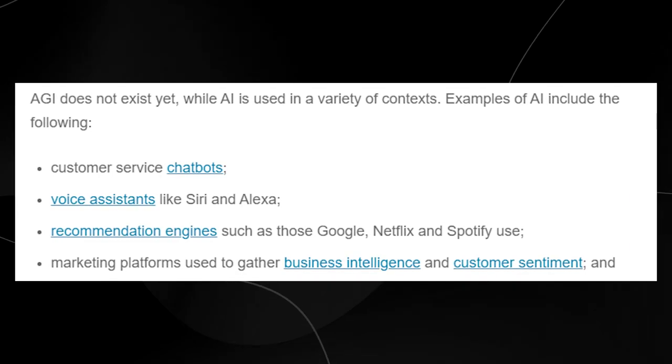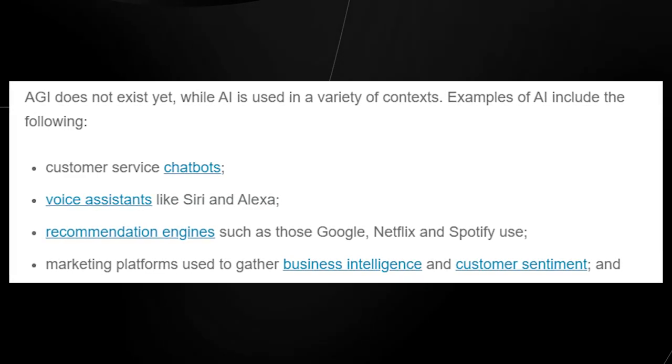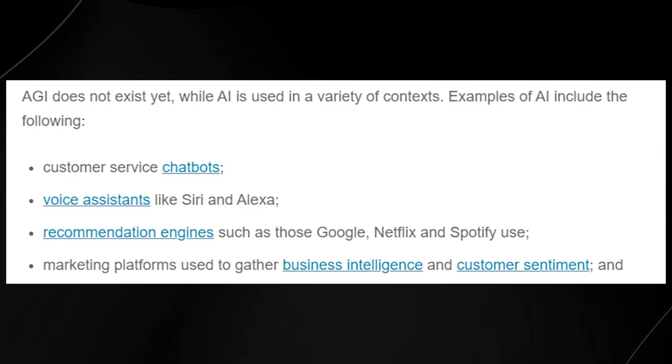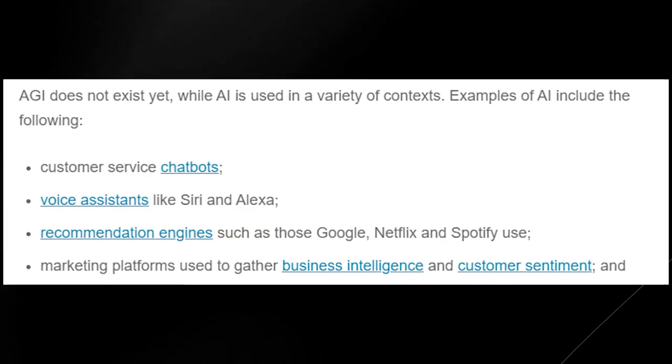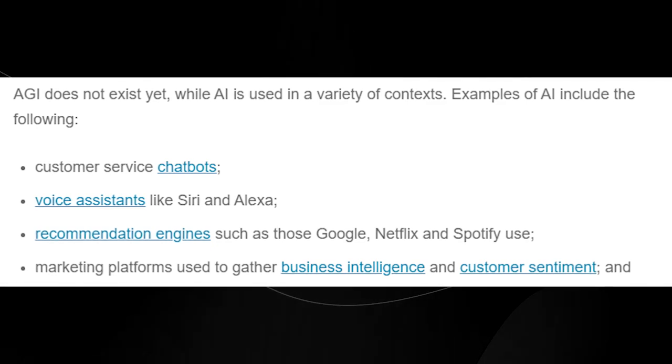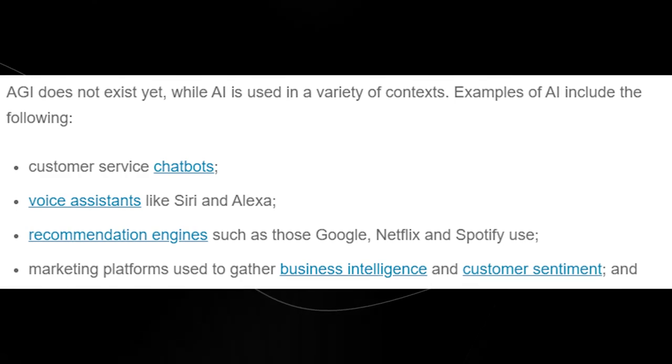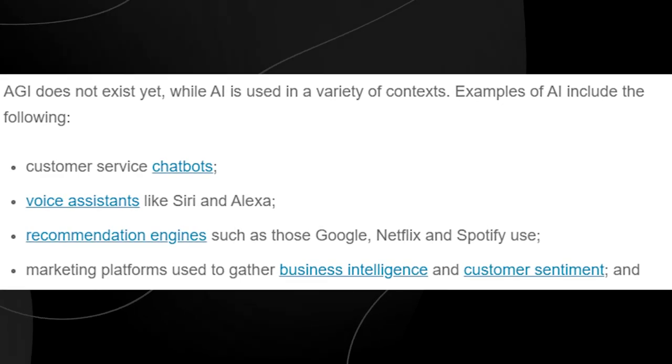It's important not to compare the two because AGI is very different from AI. AI is actually stuff like customer service chatbots, voice assistants like Siri and Alexa, and the recommendation engines used by Google, Netflix, and Spotify. It's important to make this distinction because when we go through this paper and I show you some of the key examples, sometimes it may get a little bit confusing.